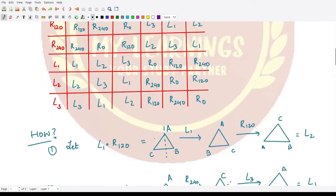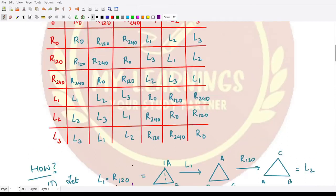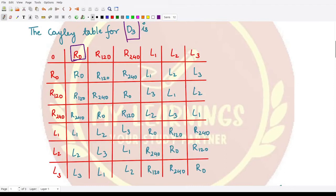First of all, R0 is the identity of this group D3. That means any element composed with R0 would be the same element.